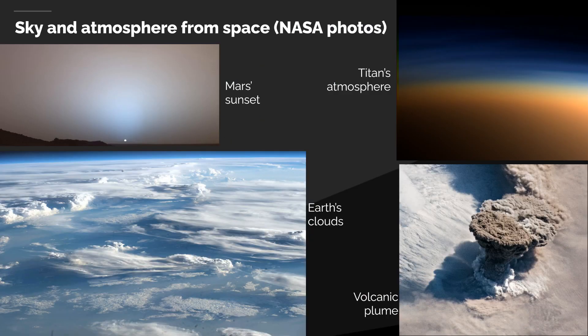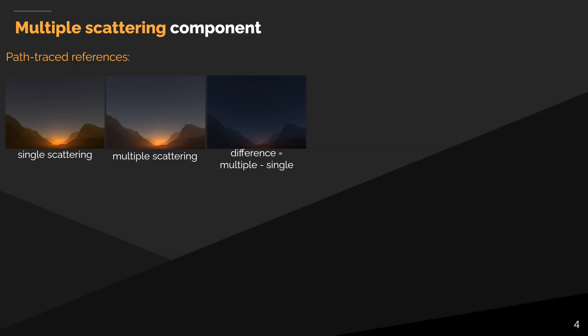Clouds are also part of the atmosphere, interacting with light and casting volumetric shadows within the atmosphere. Many other different types of atmosphere exist in space — for example Mars and its blue sunset, or Titan's complex atmosphere. The light will scatter several times within the atmosphere before reaching your eyes, and this is an important effect to simulate to achieve rich atmospheric visuals.